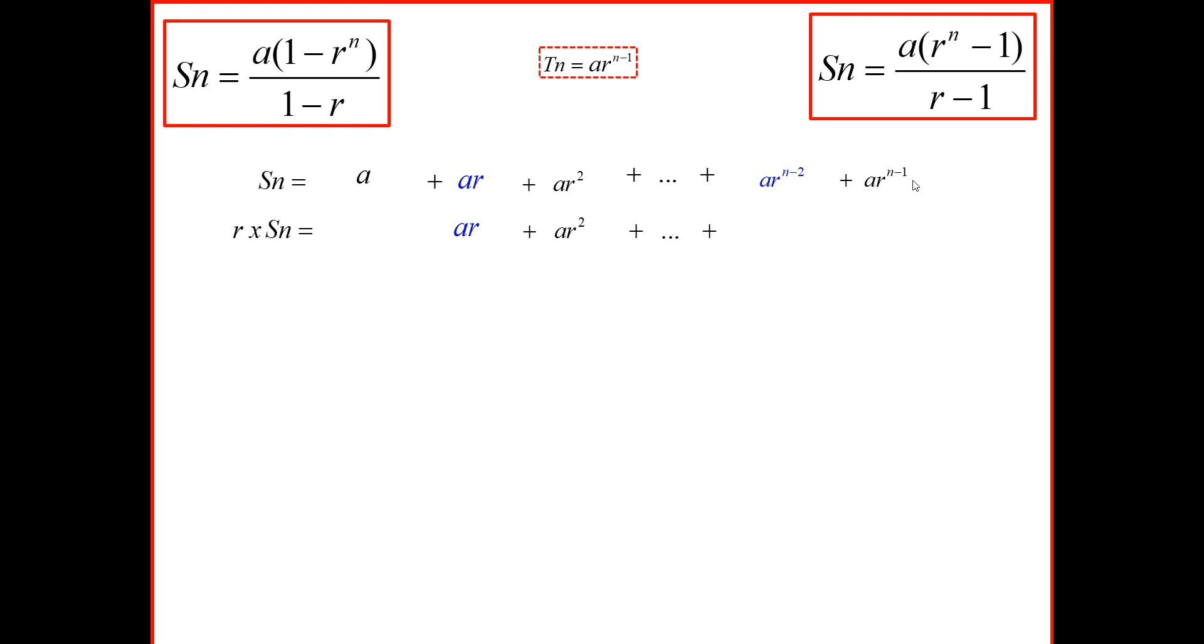If we look at our last term and we multiply the last term by r, we should get ar to the power n. If we take the second last term and multiply it by r, we would get ar to the power (n minus 1). And the term before this should be ar to the power (n minus 2).